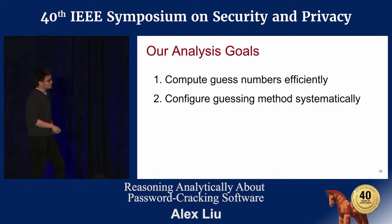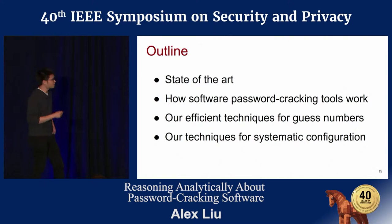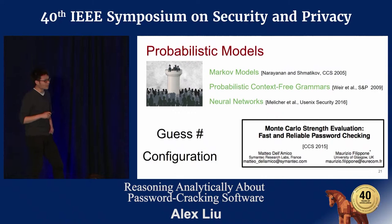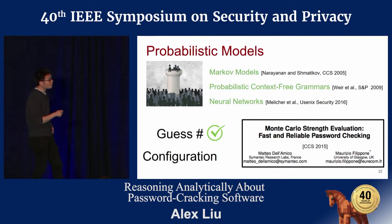This leads to our analysis goals: first, we want the process to be efficient; second, the software tools require detailed configuration, so we want a systematic and scientific process for configuring these tools. For the probabilistic models, a paper at CCS 2015 introduced using Monte Carlo methods to estimate the guess number without running the algorithm. And for these models, given some training data, they mostly configure themselves.